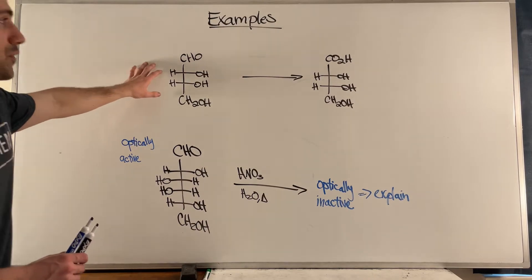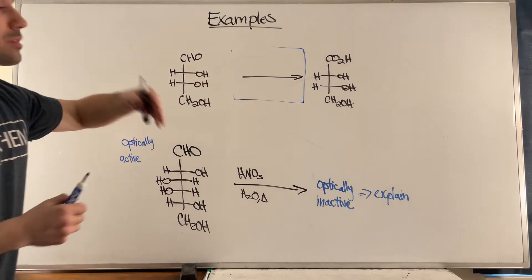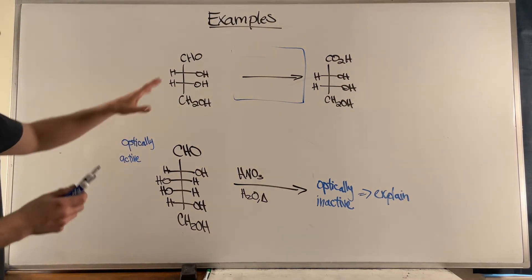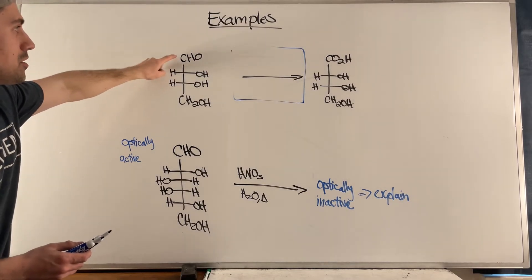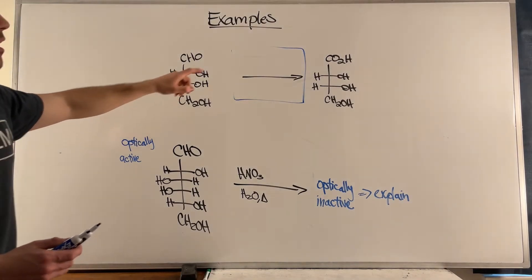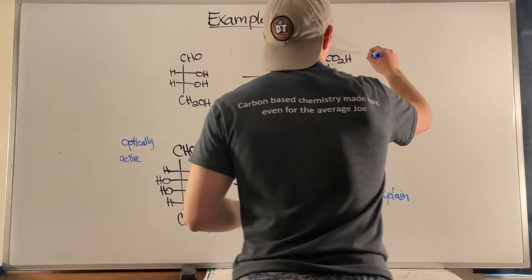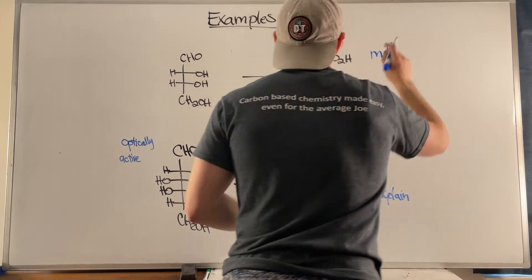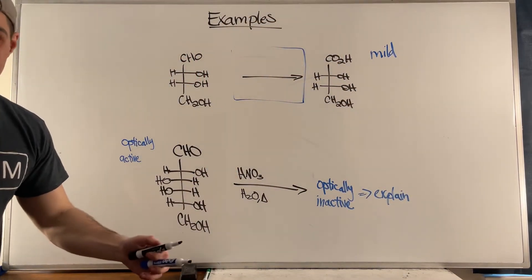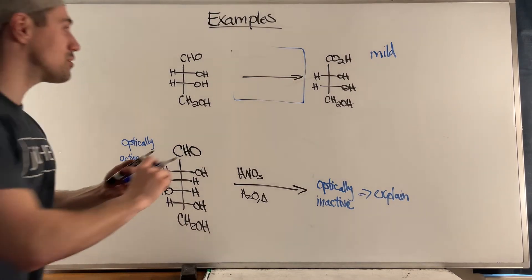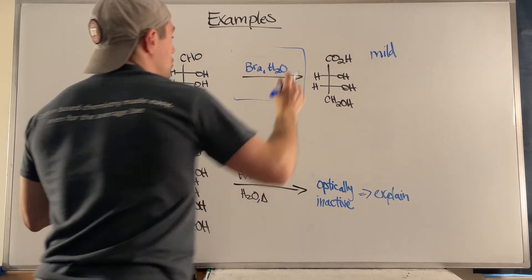For the first example, we need to provide the reagents — how did this reaction occur? Compare the top and the bottom: we have an aldehyde and an alcohol on the left, and a carboxylic acid but also an alcohol on the right. So this was a mild oxidation — we don't need to reach for the nitric acid. We don't need to be aggressive on the oxidation front. We can go with the BR2 and H2O approach.